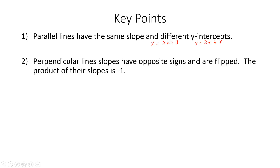Perpendicular lines have slopes that are opposite signs and reciprocals — opposite signs and flipped. The product of the slopes of perpendicular lines is negative 1. An example would be y equals one-third x plus 8 and y equals negative 3x plus 10. The slope of the first line is one-third, the slope of the second is negative 3 — opposite signs and flipped. Perpendicular lines form 90-degree angles, and parallel lines never touch.